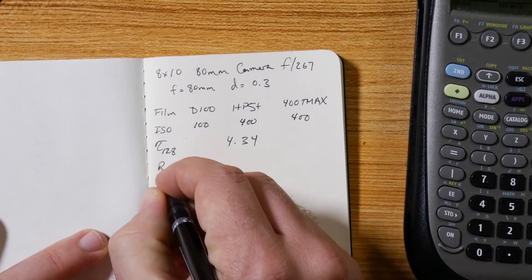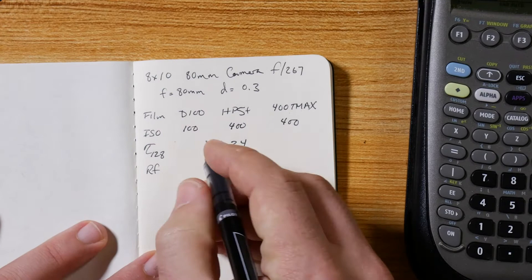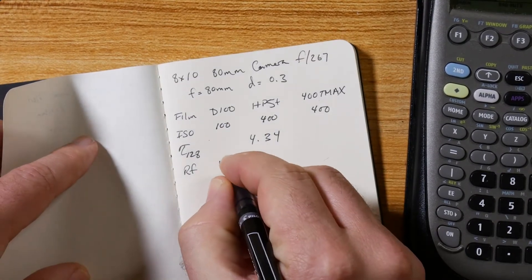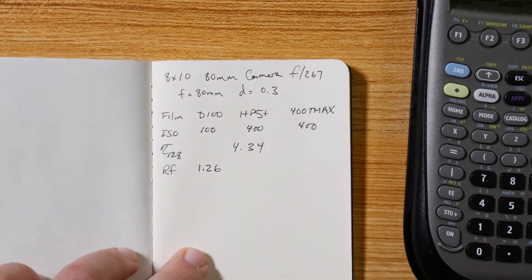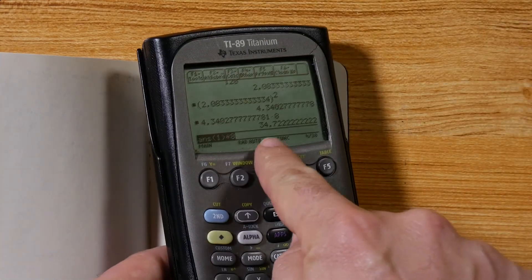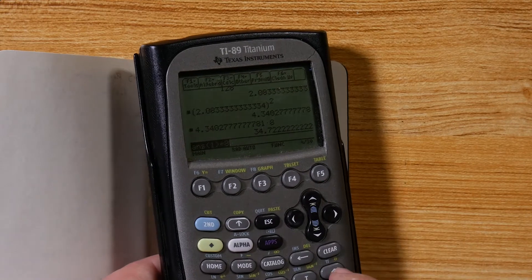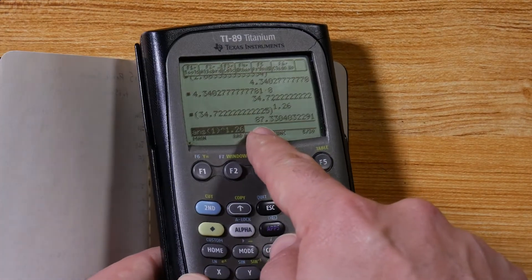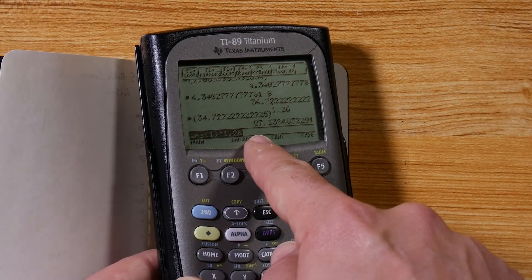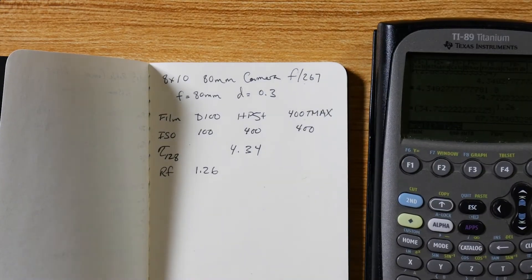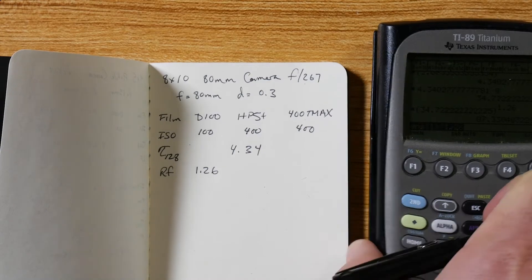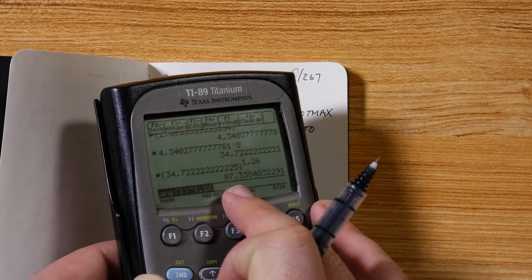Now depending on what film I'm using - well, in this case we're using Delta 100 because that's what we metered for - but we have those reciprocity factors. We can just copy them from the other page: 1.26 for Delta. So if I was using Delta here, I would just take my answer 34.72 seconds, raise that to the 1.26 power - boom, 87 seconds. That's my final shutter speed. And you can always err on the side of having more exposure because film has good latitude when it comes to overexposure.